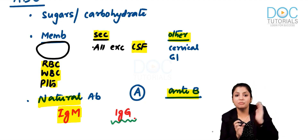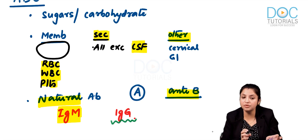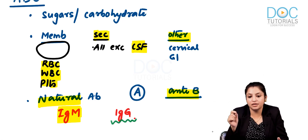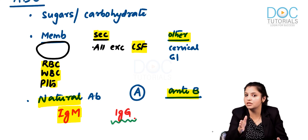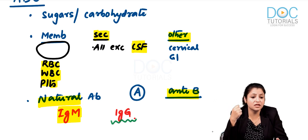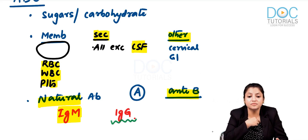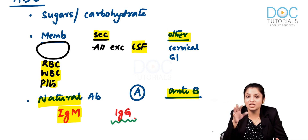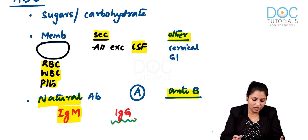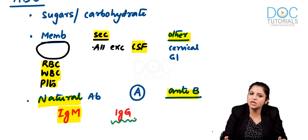Because O blood group mothers have some IgG anti-A or anti-B antibodies, these can cross the placenta and cause ABO hemolytic disease of the newborn. ABO HDN is usually seen in O blood group mothers when the child is either A or B blood group. For example, my mother is O blood group and I am A blood group, and I was actually born with ABO hemolytic disease — because her antibodies crossed the placenta.